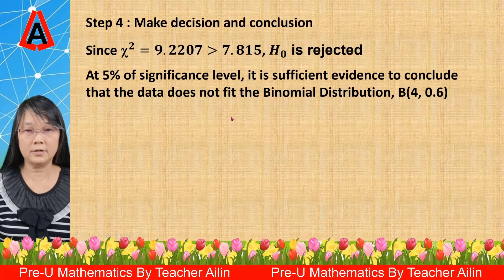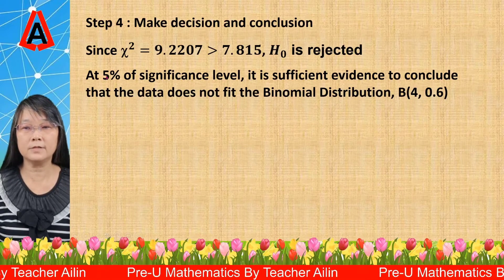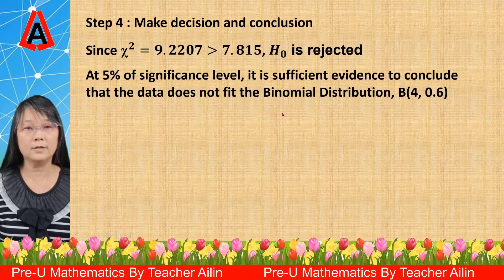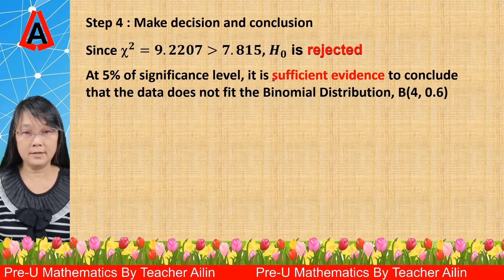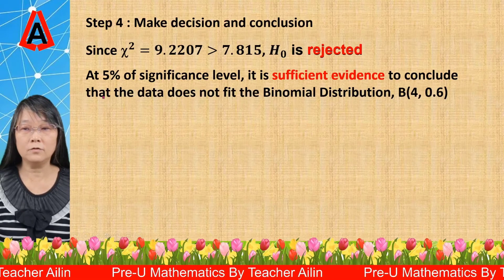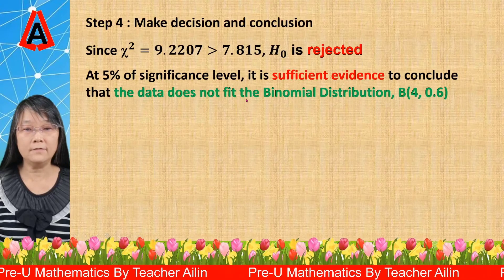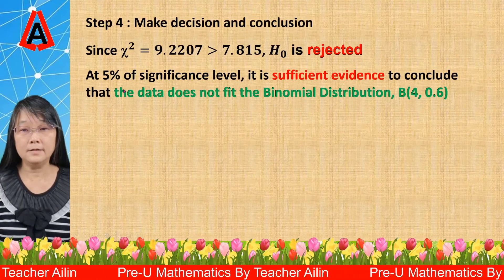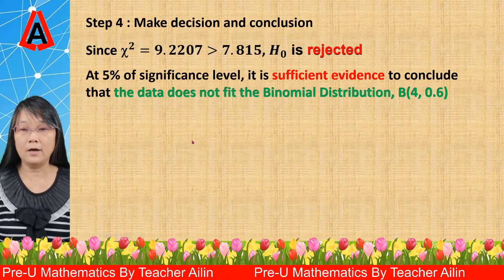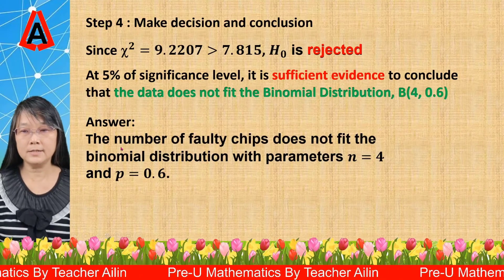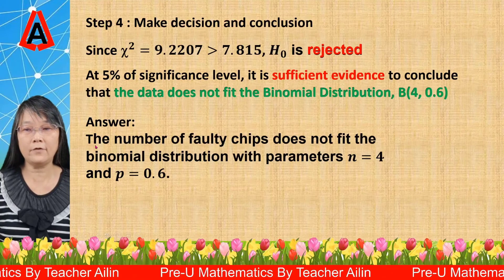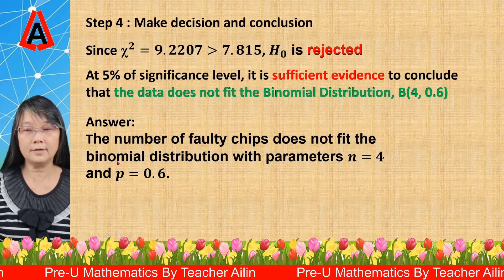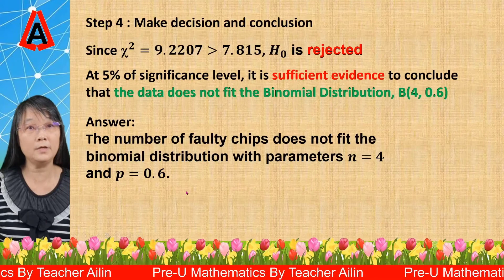When writing the conclusion, we must first mention the significance level, which is 5%. If the decision is to reject H₀, the keyword is 'sufficient evidence'. If the decision is not to reject H₀, the keyword is 'insufficient evidence'. We conclude H₁: the data does not fit the binomial distribution. To directly answer the question, which asks whether the number of 40 chips follows the binomial distribution: therefore, the number of 40 chips does not fit the binomial distribution with parameters N equals 4 and P equals 0.6.